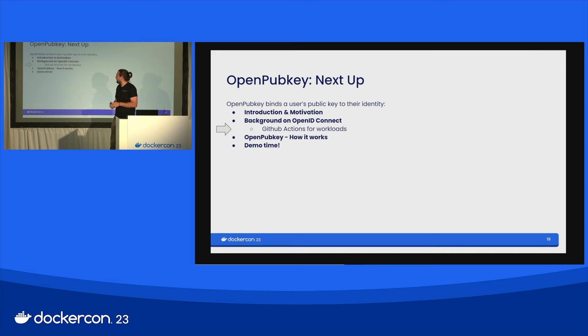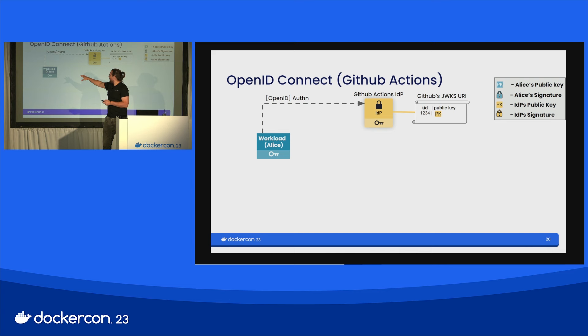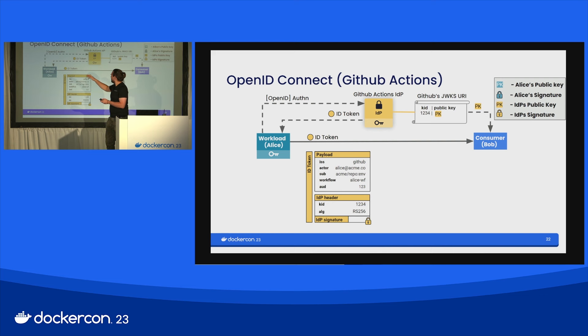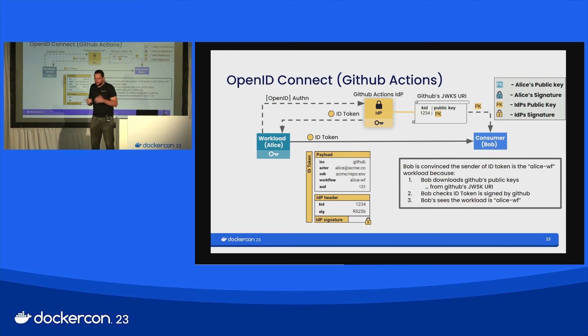Before I explain the details of how OpenPubKey works, I need to provide a little background on OpenID Connect, using GitHub Actions as the example. Our workload — Alice — can authenticate to the GitHub Actions IDP. When it does this, the IDP creates an ID token which has a number of attestations about Alice's identity, and the IDP signs this ID token under the IDP signature. Alice can then present this ID token to Bob, and Bob will be convinced that Alice is Alice. Bob can go and check that the ID token is signed under the GitHub Actions public key by downloading the public key at the GitHub JWKS URI, which is an OpenID Connect way of making public keys available.